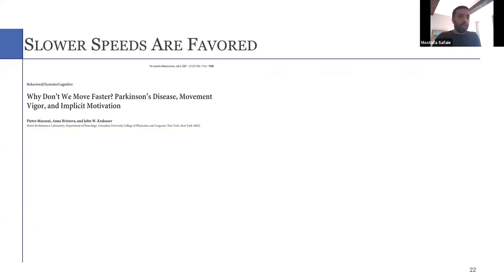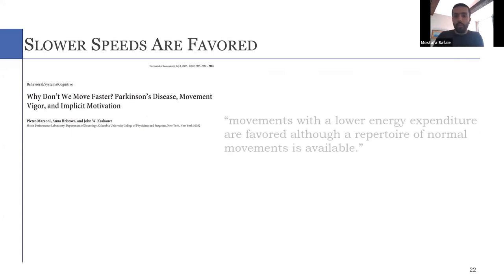So we think that the most parsimonious explanation of our data is that animals actually preferred running at a slower speed. And this is in line with this great paper in Parkinsonian patients, where authors show that movements with a lower energy expenditure are favored, although the repertoire of normal movements is available.